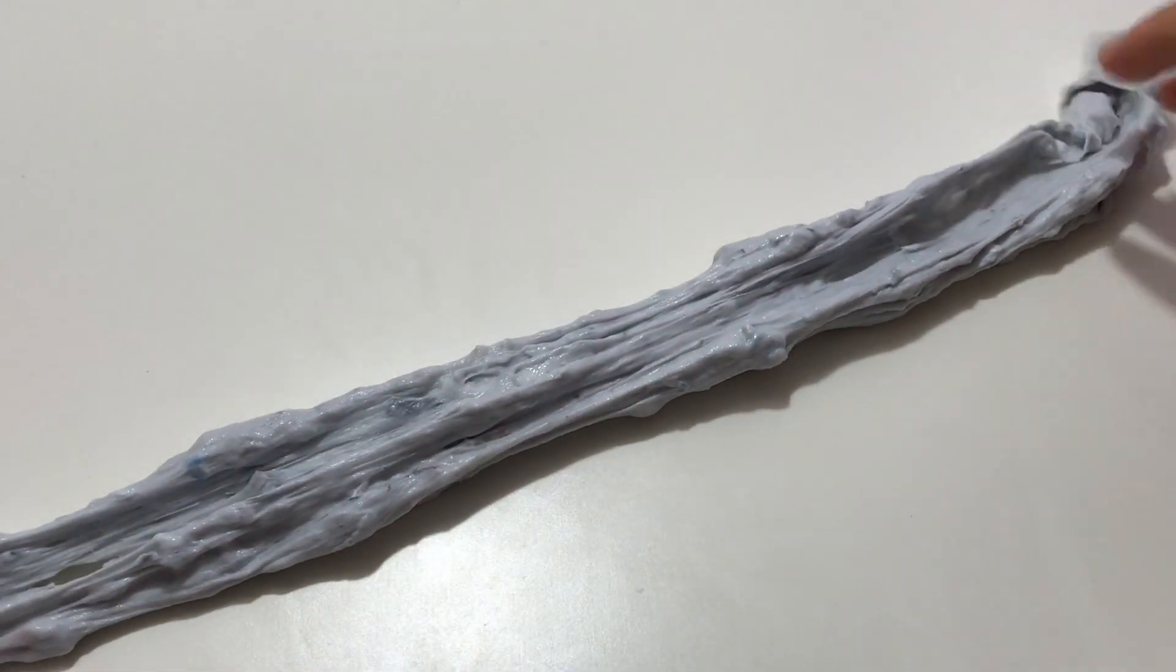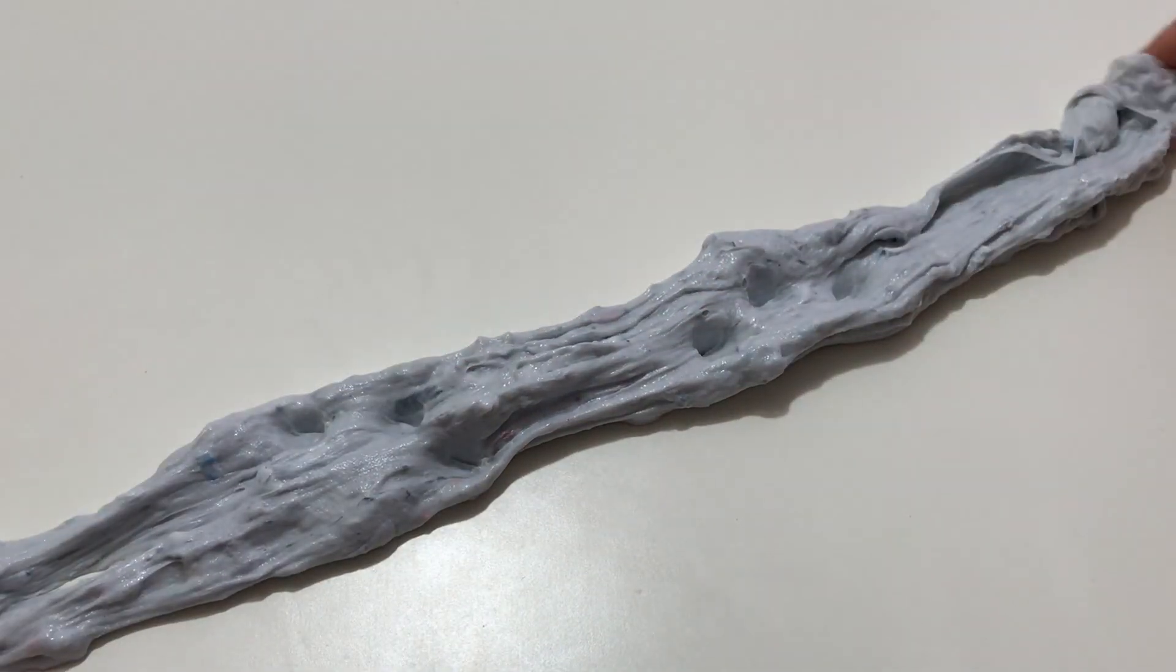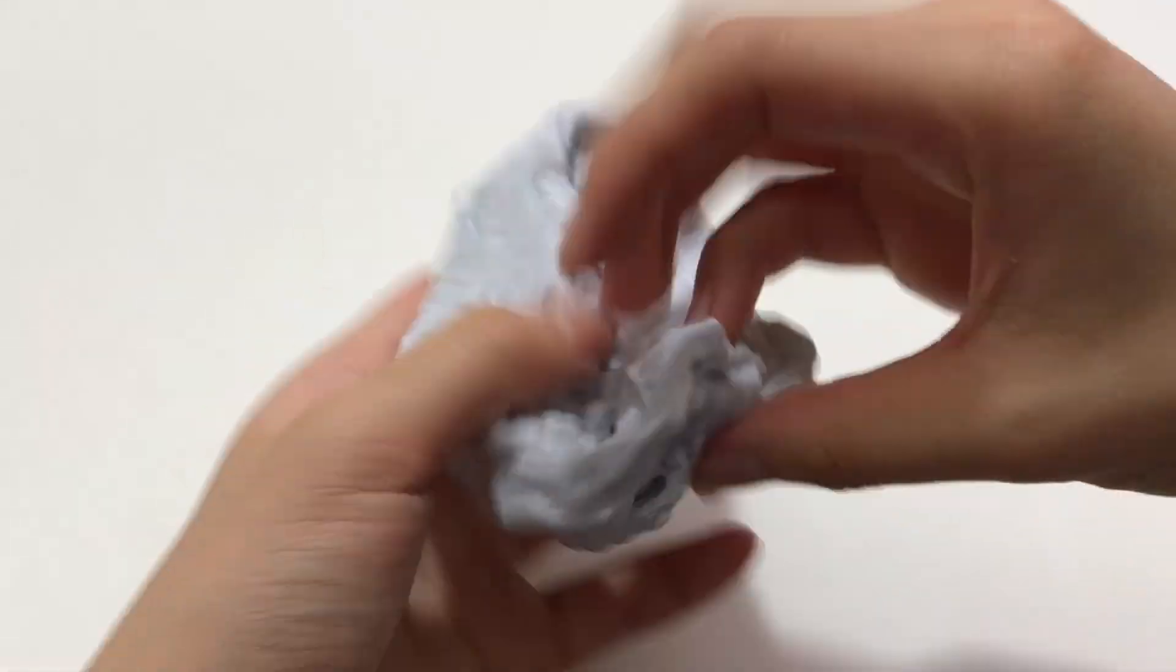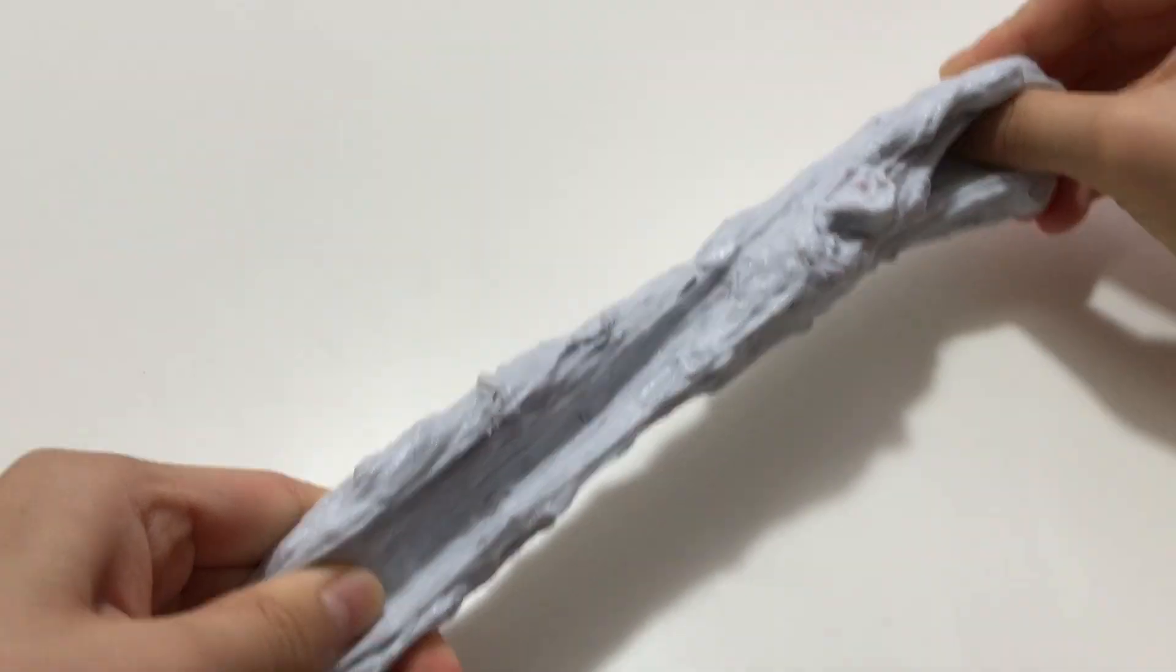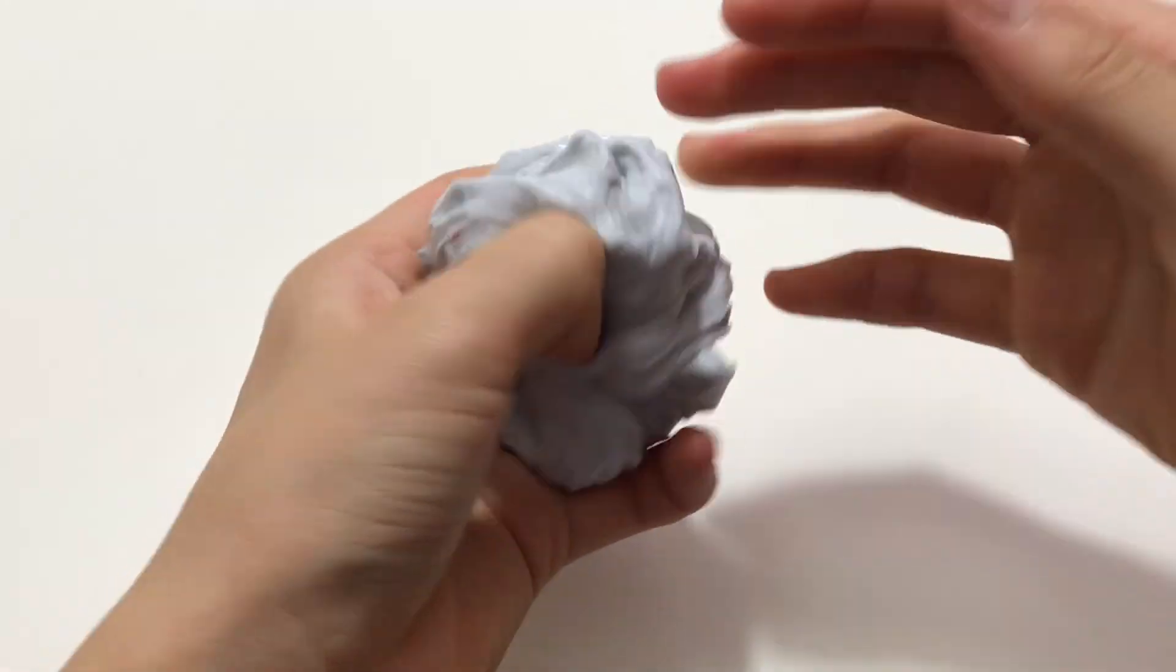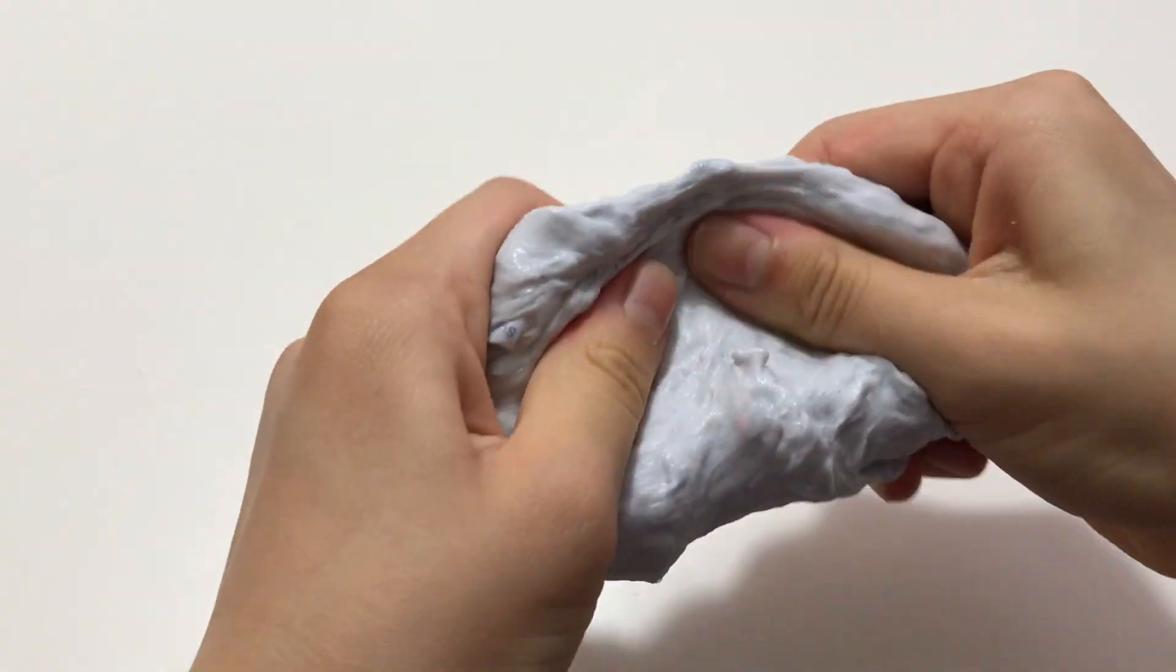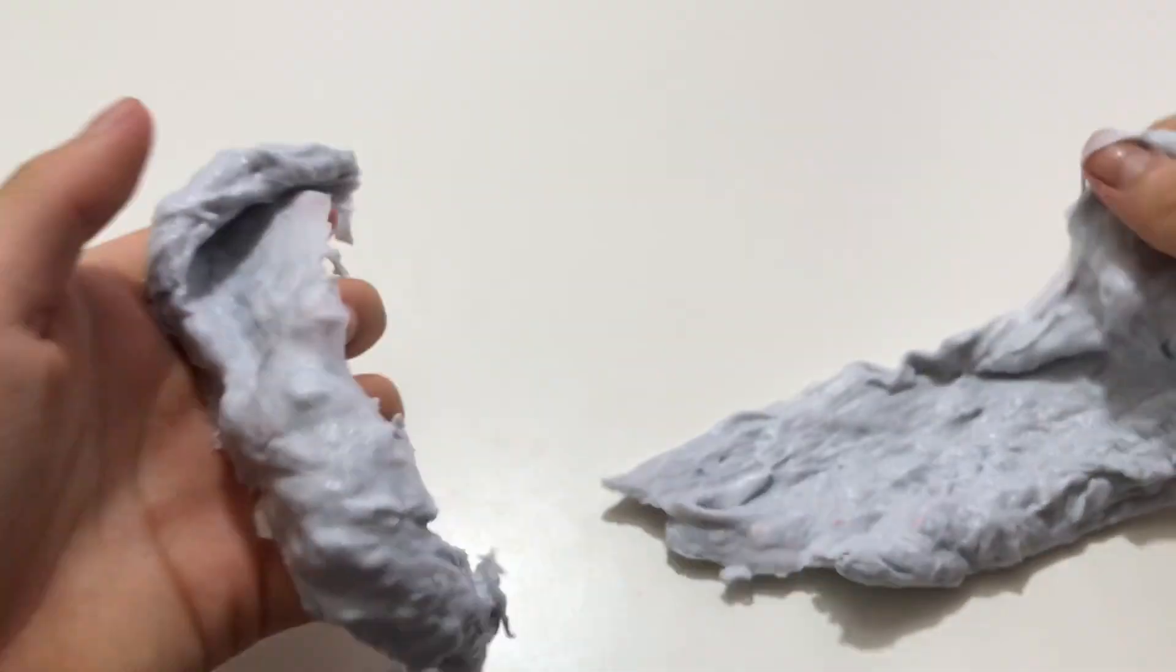But anyways here is my slime. I don't know if it's a fail or not. I mean it's sort of a fail but to be honest it's pretty fun to play with. The papers basically makes the slime like not really ripped right, it's ripped sort of like paper but like soggy paper I guess you can say.